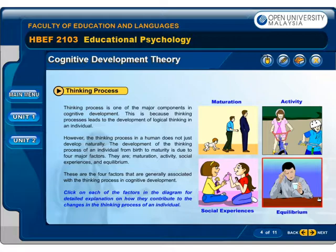The four major factors are: Maturation, Activity, Social experiences, and Equilibrium. These are the four factors generally associated with the thinking process in Cognitive Development. Click on each of the factors in the diagram for a detailed explanation on how they contribute to changes in the thinking process of an individual.